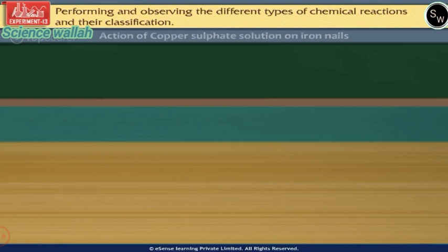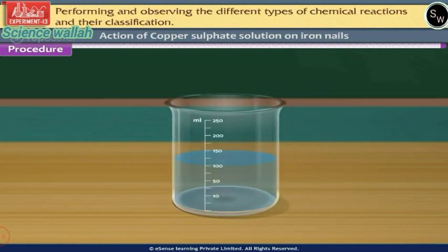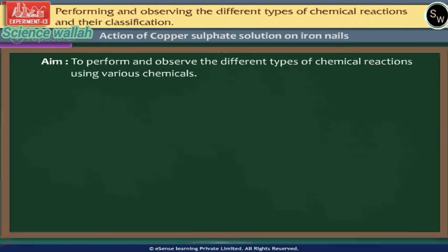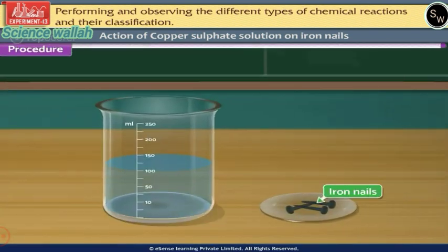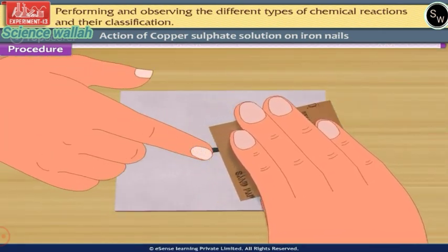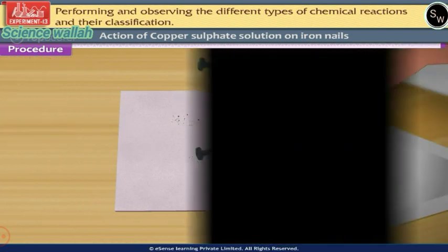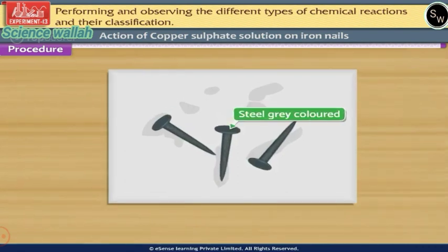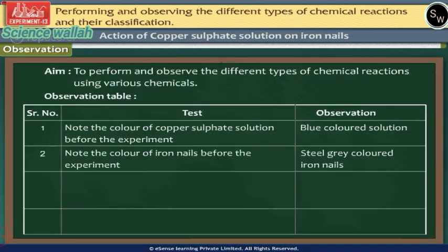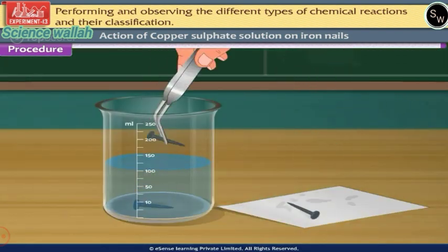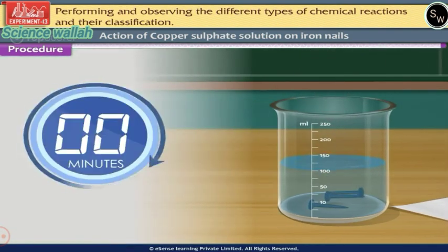Now let us study the action of copper sulphate solution on iron nails. Procedure: Take about 100ml of copper sulphate solution in a beaker — note its colour, it is blue. Take 2 or 3 iron nails free from rust, clean them with sandpaper, and wash them with water. Note the colour of the iron nails — they are steel grey. Place the iron nails in the copper sulphate solution for about 15 minutes.